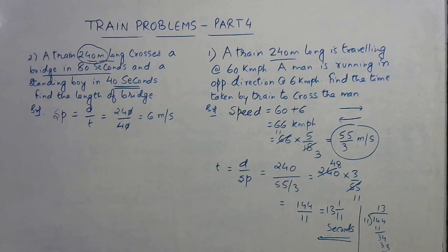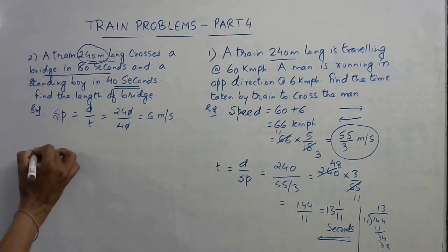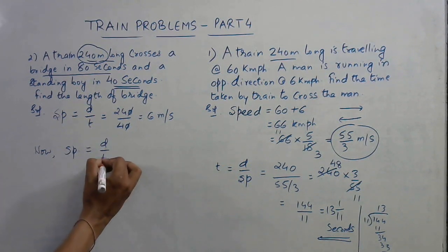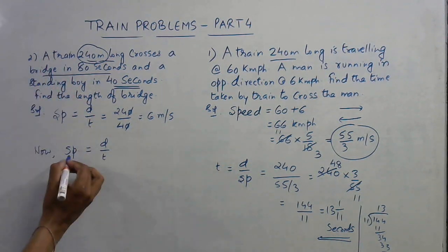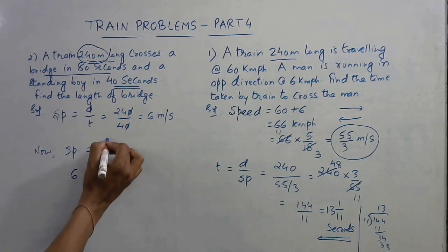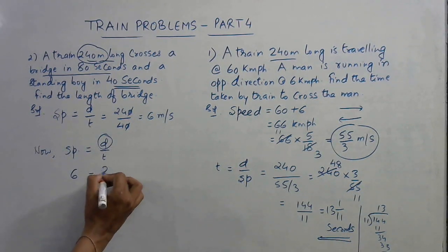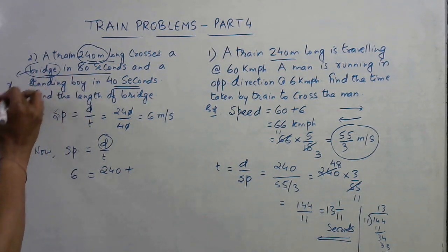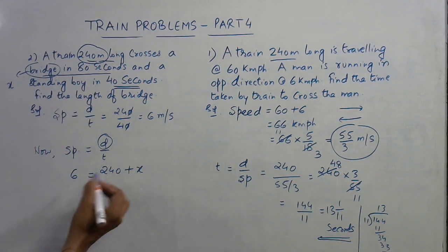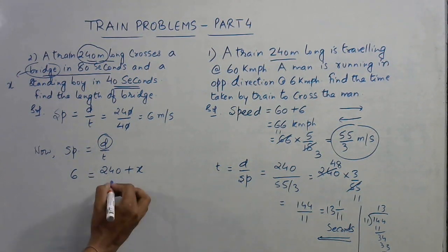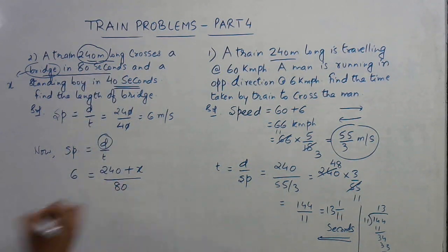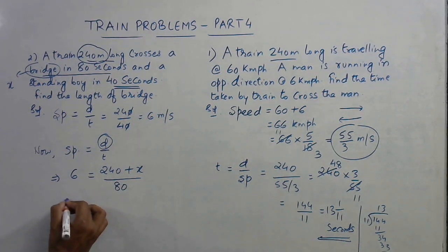Again, speed equals distance by time. In case of the bridge, speed we have already found out as 6. Now the distance is the length of the train plus the length of the bridge, so I consider that the bridge is x meters long. So total distance to be covered is 240 plus x divided by time, and the time to cross the bridge is 80 seconds. This is a simple equation in one variable: 480 minus 240 equals x, thereby giving you the length of bridge as 240 meters.